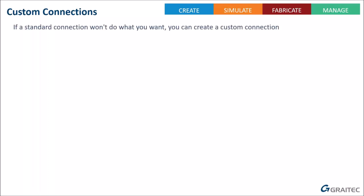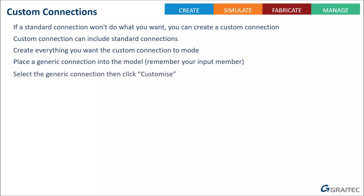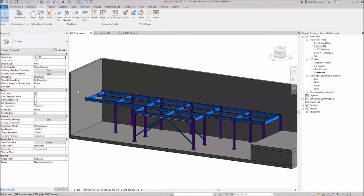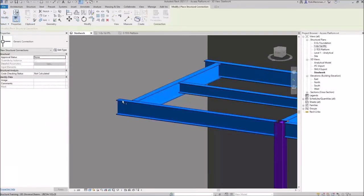If none of the 150 standard connections does what you need, you can create a custom connection. Importantly, your custom connection can include one of the standard connections with extra elements added. Model everything the custom connection needs, then place a generic connection into the model - select the members first if the connection involves multiple members. Then choose the generic connection, click Customize, name your connection, and add the required elements.